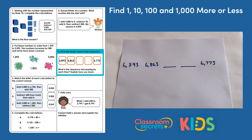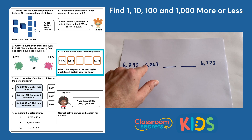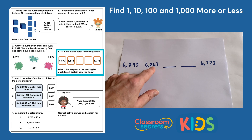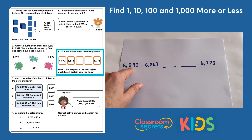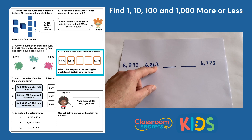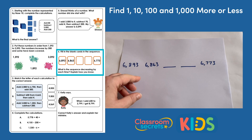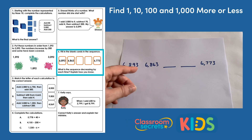Question 6: complete the sequence. We have six thousand eight hundred and ninety-three, six thousand and sixty-three, blank, blank, and six thousand seven hundred and seventy-three. The question asks what the sequence is decreasing by each time. Looking at the first two numbers, only one digit has changed — the tens. We've got six thousand in both, eight hundred in both, and three ones. The first number has nine tens and the second has six tens, meaning we've lost three tens, so the sequence is decreasing by thirty each time.